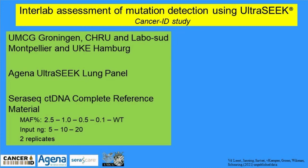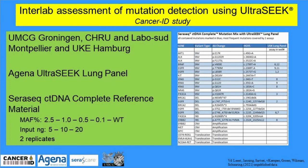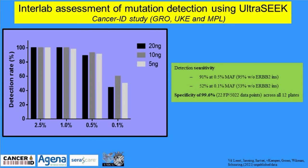The first test we did to see how this new technology works is the CancerID study involving three European laboratories that independently tested the same set of samples — reference material from Seracare carrying many different mutations. Every experiment was done in replicates, inputs varied between 5 to 20 nanograms, and we used different allelic frequencies. To make a long story short, the detection rates by different laboratories show that sensitivity down to 1% allelic frequency is 100%, and at 0.5% sensitivity is still 91%, even when using only 5 nanograms. The sensitivity of the UltraSeq test is very good.